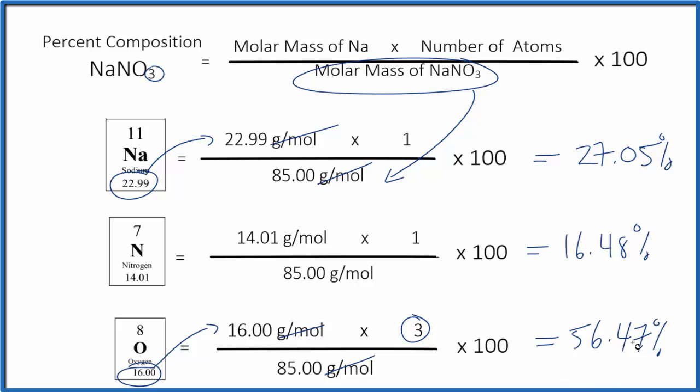All of these numbers should add up to very close to 100 percent. This is Dr. B with the percent composition by mass for each element in NaNO3, sodium nitrate. Thanks for watching.